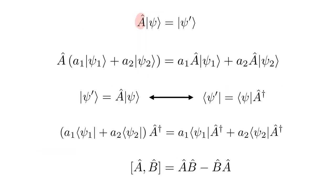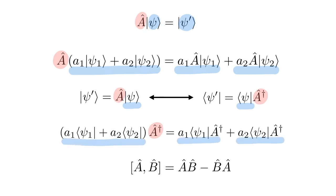To summarize: an operator A is an object that acts on a ket psi and gives another ket psi-prime. A fundamental property is linearity — when acting on a linear superposition of two kets it acts on each individually. The action of operator A on ket psi corresponds to the action of the adjoint operator a-dagger on bra psi, and the adjoint is also linear. Operator multiplication is not necessarily commutative, leading to the definition of the commutator AB minus BA. Check out the exercises video in the description to become familiar with manipulating operators, and please subscribe if you enjoyed the video.